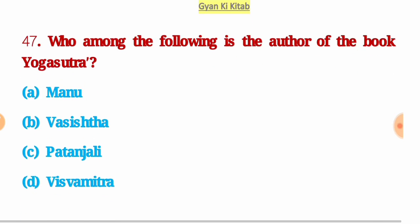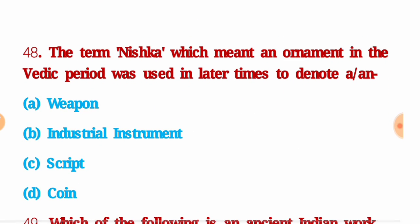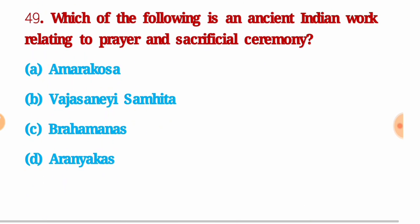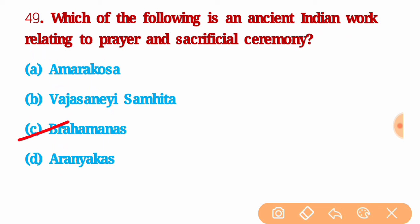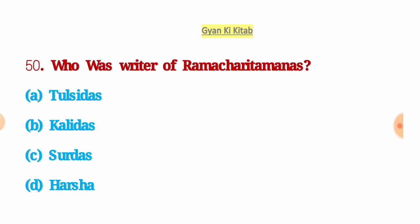Next question: who among the following is the author of the book Yoga Sutra? The right answer is option C: Patanjali. Next question: the term Nishka, which meant an ornament in the Vedic period, was used in later times to denote a — the right answer is option D: coin. Next question: who was the writer of Ramcharitmanas? The right answer is option A: Tulsidas.